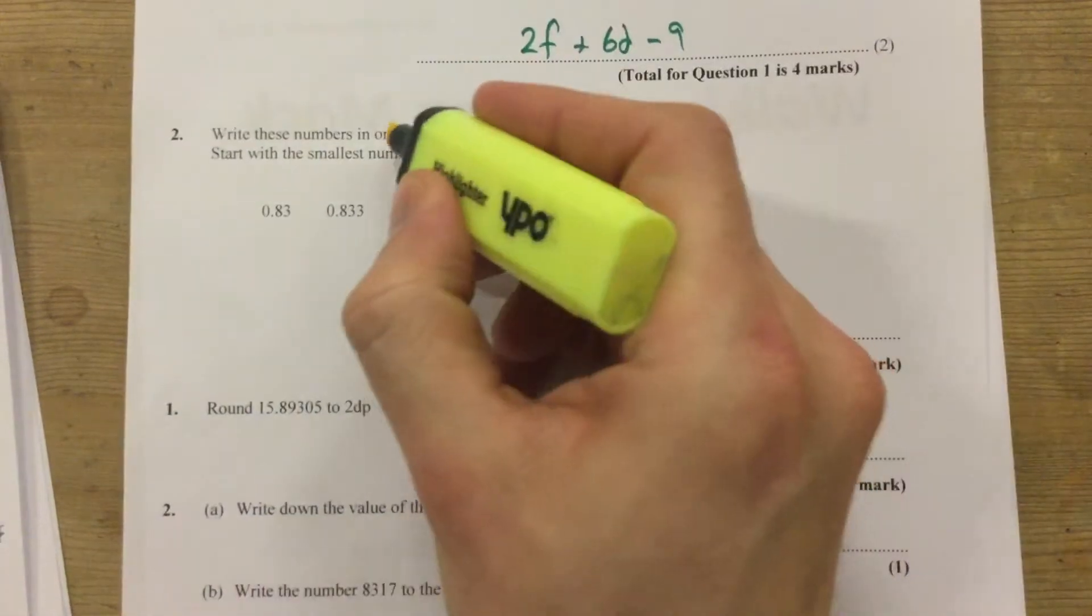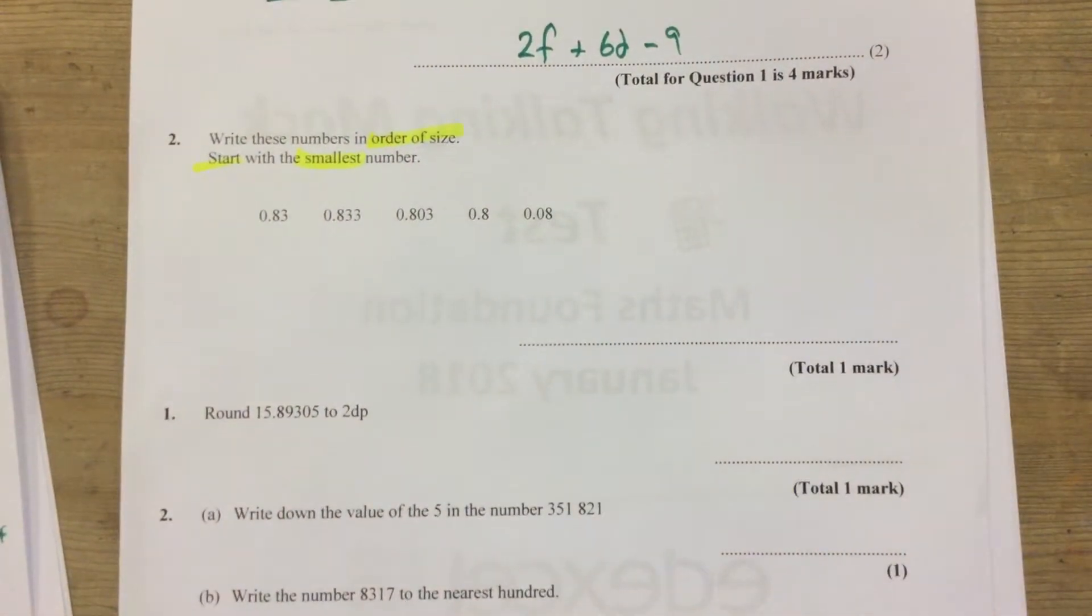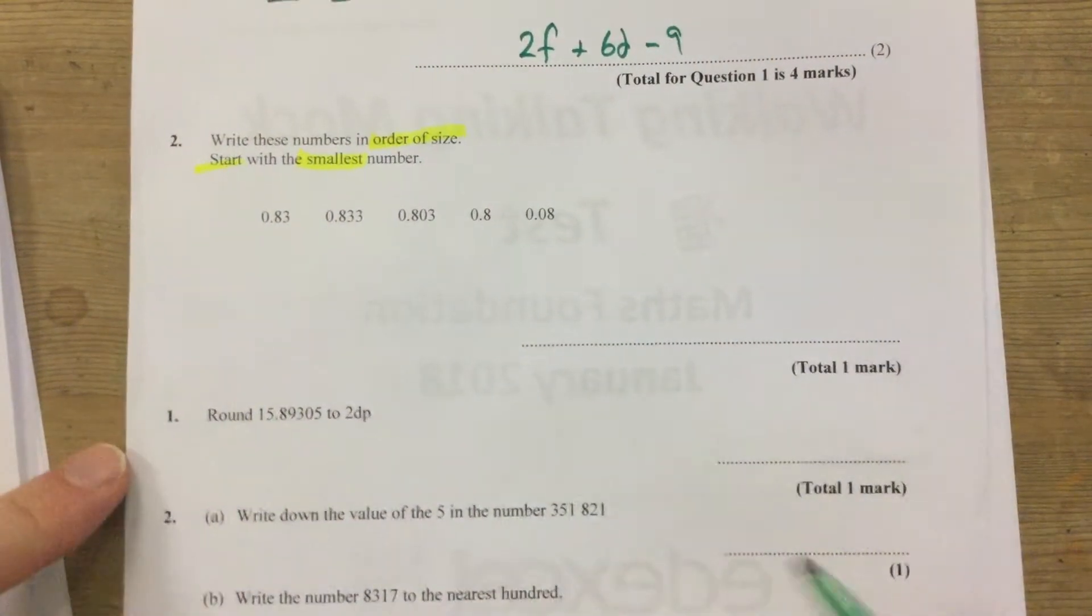So, again, we're writing the numbers in order of size, and again we're starting with the smallest number, and I'm going to write them down vertically.